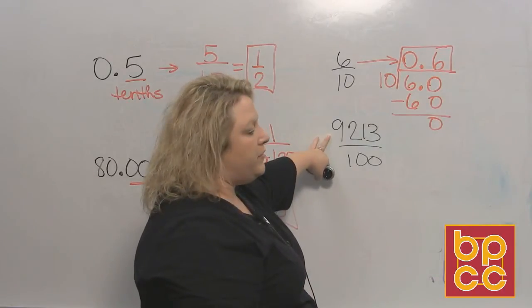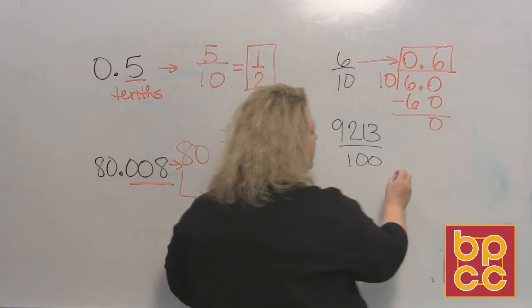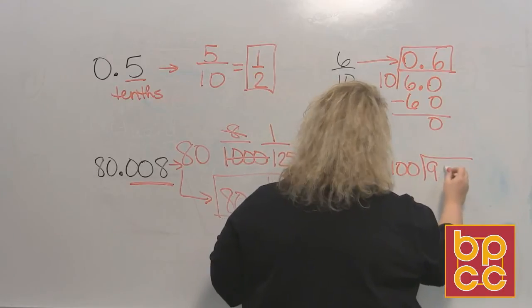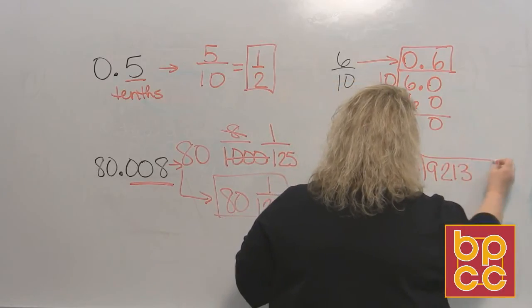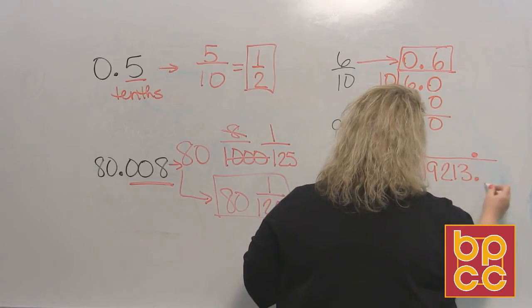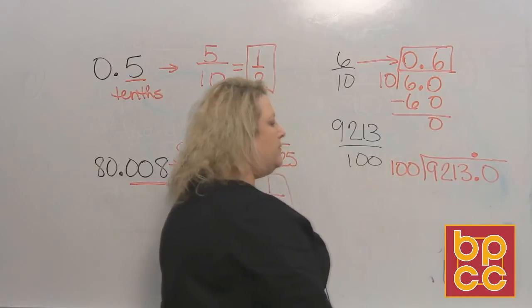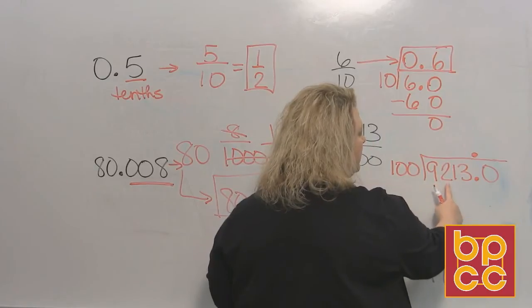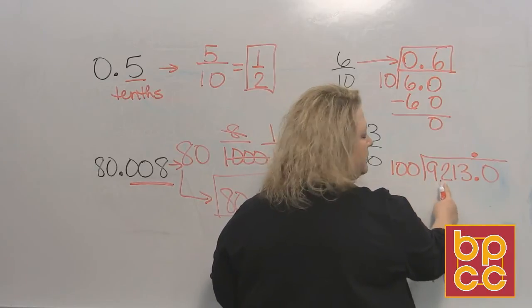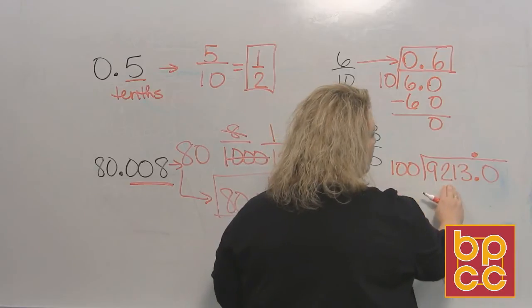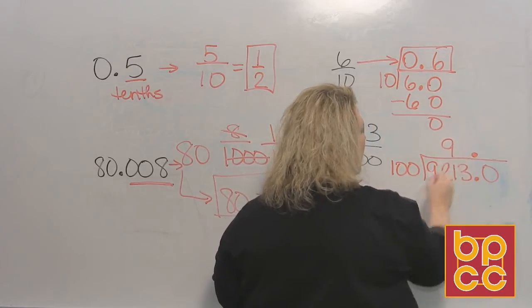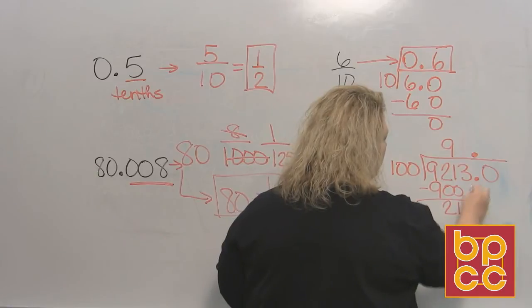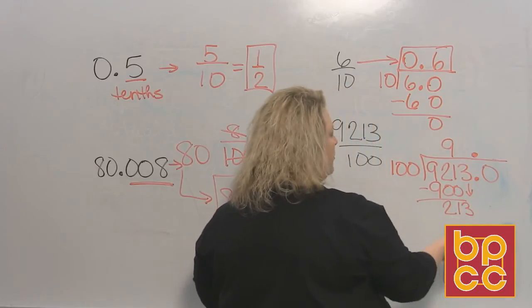We have 9,213 and we want to divide that by 100. So when I do that, I put 100 on the outside. I put 9,213 on the inside. I'm going to go ahead and stick a decimal point and get me a zero going. And I'm going to divide. Does 100 divide into 9? Absolutely not. So you move over, remember? 100 also does not go into 92. However, 100 will go into 921 nine times, which makes 900. So then we divide and that leaves me 21. Then you bring down the next number and you repeat the process.